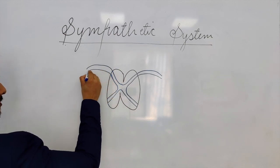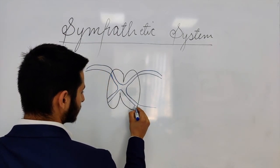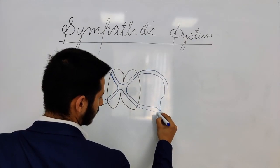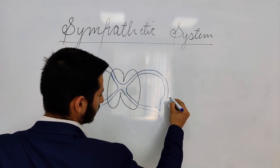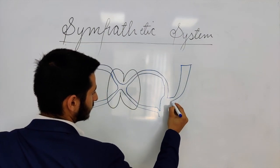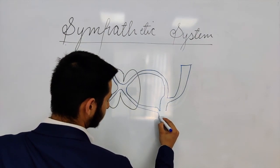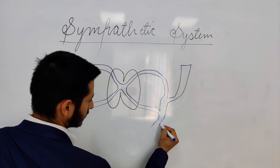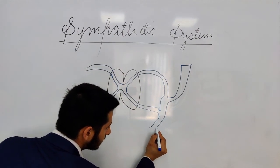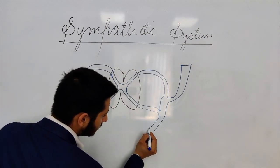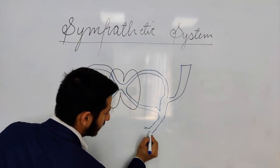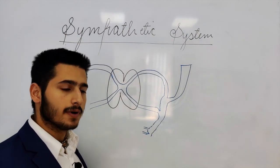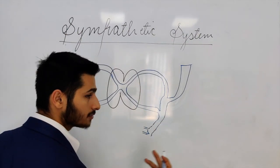The posterior roots and the anterior roots — this gives off a posterior branch known as the posterior ramus, and it continues to descend further, giving rise to the anterior ramus. This anterior ramus has branches through which the preganglionic fibers travel to the sympathetic trunk, or to the paravertebral trunk.